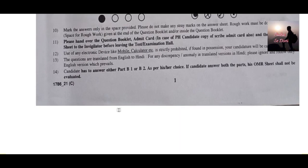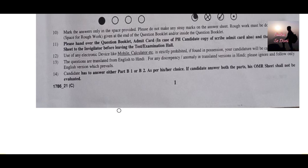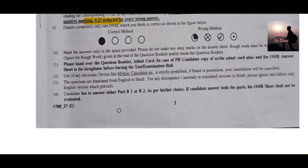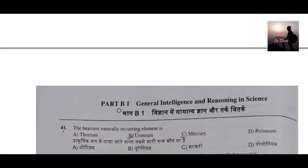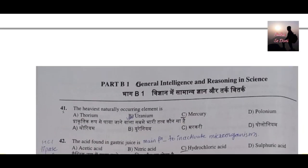There are five sections of this particular question paper: Part A, Part B, Part C, Part D, and Part E. We are discussing all the parts, but today in this video session I am going to discuss Part B. Part B is dealing with general intelligence and reasoning in science. The science syllabus is from standard 8 to standard 12.